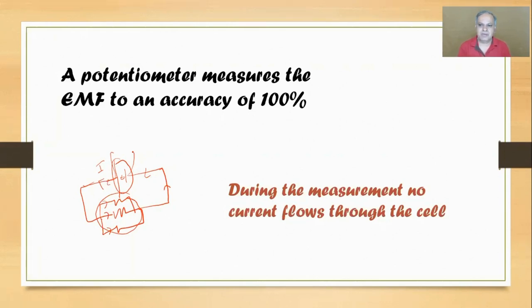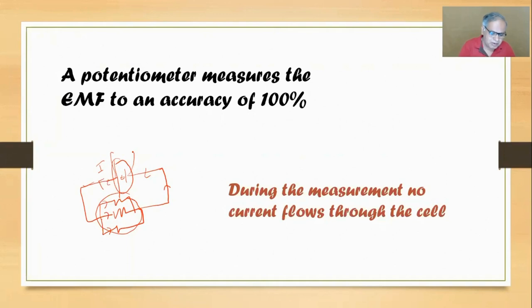The potentiometer measures the potential difference between the cell's terminals when current is not flowing - that's why we say the potentiometer measures EMF very accurately, with 100% accuracy.